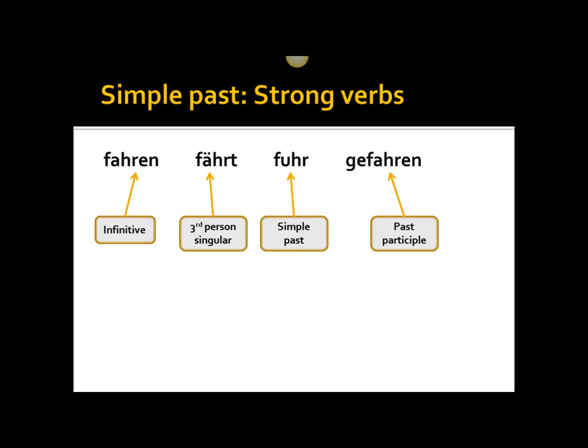With the simple past of strong verbs, we need to know the four principal parts of our verbs. These are found in the back of any German textbook or online. As you see here on the screen, we have fahren, fährt, fuhr, gefahren — the infinitive, the third person singular present tense, the simple past, fuhr, and the past participle, gefahren. To form the simple past, we are going to focus specifically on the third principal part — the simple past stem: fuhr.